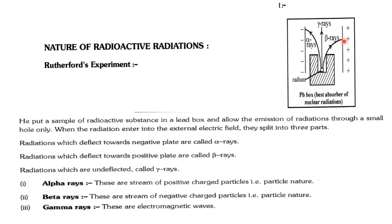The rays deflected toward the positive terminal are called beta rays — they are negatively charged particles. The rays deflected toward the negative terminal are called alpha rays — they are positively charged particles. The rays that showed no deflection are the neutral gamma rays. So radioactivity may involve three processes: alpha emission, beta emission, and gamma emission, and the associated particles are called alpha particles, beta particles, and gamma rays.